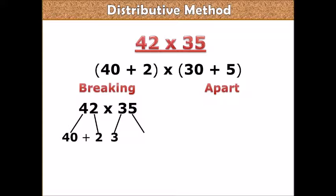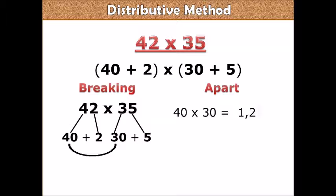So 35, you have 30 plus 5. So now you multiply 40 by 30. So 4 times 3 will be 12, then you put the double zeros after. So 12 will be 1200. 40 times 30 will be 1200.